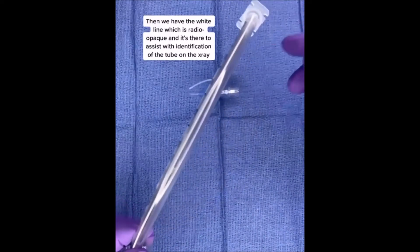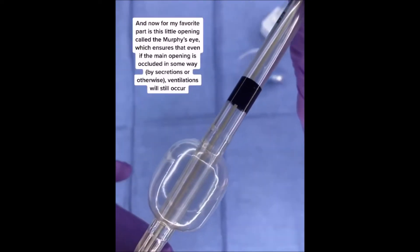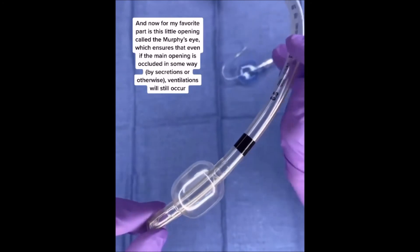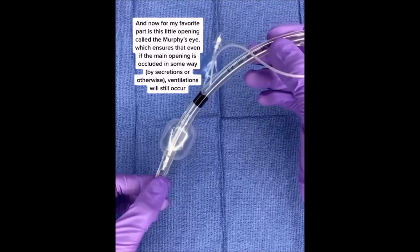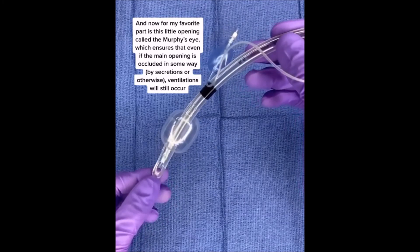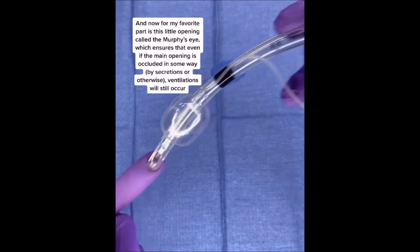Then we have the white line, which is radio opaque and assists with identification of the tube on the x-ray. And now for my favorite part, this little opening called the Murphy's eye, which ensures that even if the main opening is occluded in some way by secretions or otherwise, ventilations can still occur.